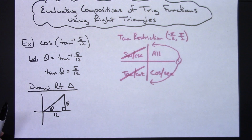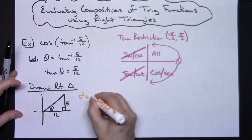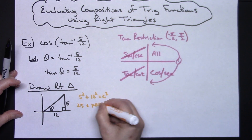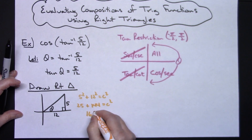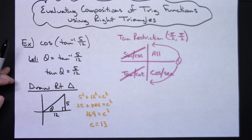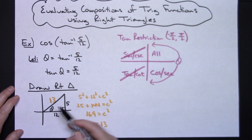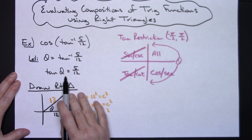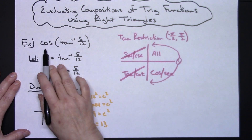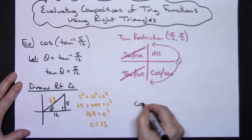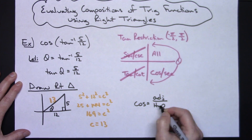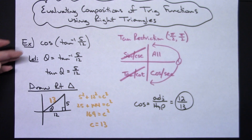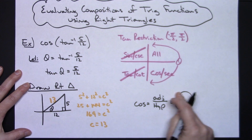Tangent is opposite over adjacent, so this side has to be 5 and this side has to be 12. Since it's a right triangle I can use the Pythagorean theorem: 5 squared plus 12 squared equals c squared. So 25 plus 144 equals c squared, giving 169 equals c squared, so c equals 13. You might have recognized that as a Pythagorean triple. Now that I have this right triangle, the triangle represents the inside. I can use it to find the cosine of theta. Cosine is adjacent over hypotenuse, so adjacent is 12 and hypotenuse is 13 — giving 12 over 13.